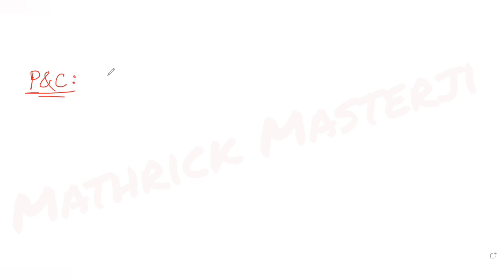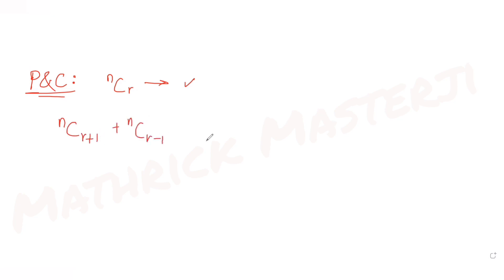The question tells us: if nCr denotes the number of combinations of n things taken r at a time — so nCr is the combination where n is the total number of options and r is the required number to be selected — then the expression given is nCr+1 + nCr-1 + 2·nCr, and it asks us what this equals.